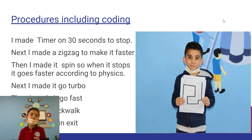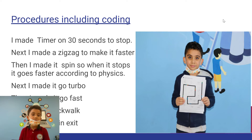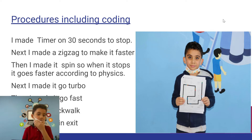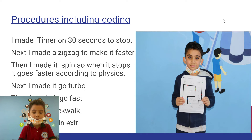Next, I made a zigzag to make it faster. Then, I made a splinter when it stopped. Then, a twin exit. Play again.